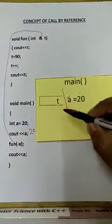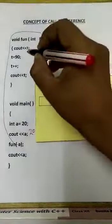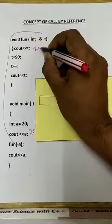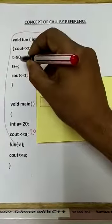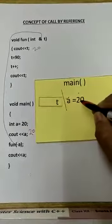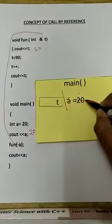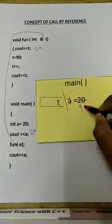Now cout t. The value of t is 20, so 20 will be printed. t is equal to 90. The value of t is changed, so instead of 20, now it will become 90.